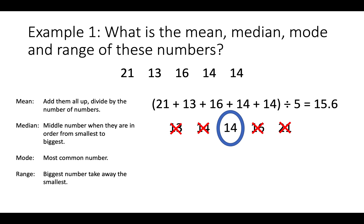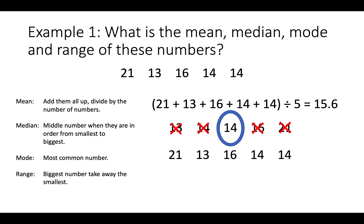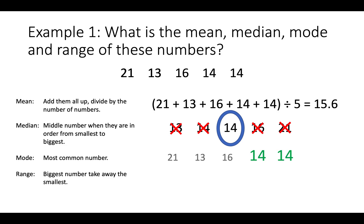Now I want to find the most common number. I look at the list and I see that 14 is the number that occurs the most often. So 14 is the mode.